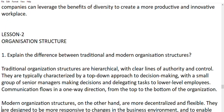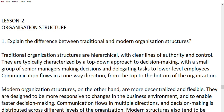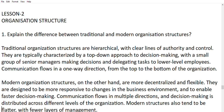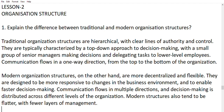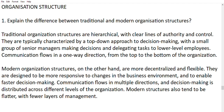Now Lesson 2: organizational structure. Explain the difference between traditional and modern organization structure. Traditional organization structure is hierarchical with clear lines of authority and control, typically using a top-down approach to decision making where a small group of senior managers make decisions followed by all others; communication generally flows from top to bottom. Modern organization structure is more decentralized and flexible, designed to be more responsive to changes in the business environment, enabling faster decision making. Communication flows in multiple directions and the structure tends to be flatter with fewer layers of management.